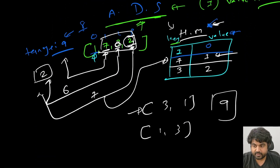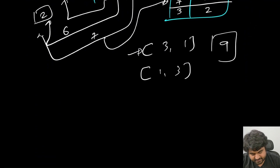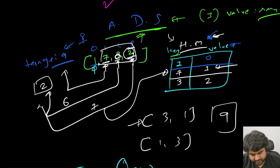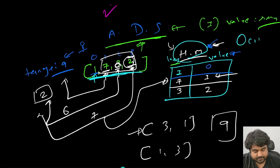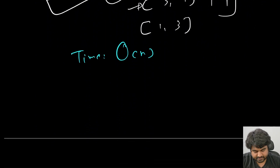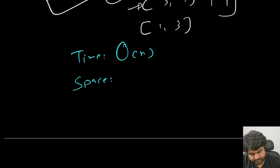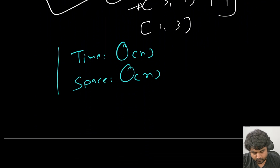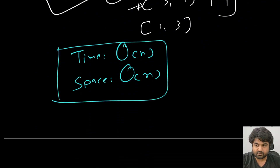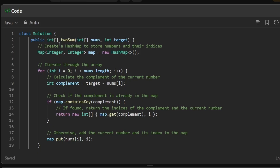Let's analyze the time and space complexity. Time complexity is O(n) because we iterate over all elements just once, and searching whether a value is present in the hash map takes O(1) time. Space complexity is also O(n) because we use an additional hash map to store results. This is much faster than both the brute force and sorting approaches.